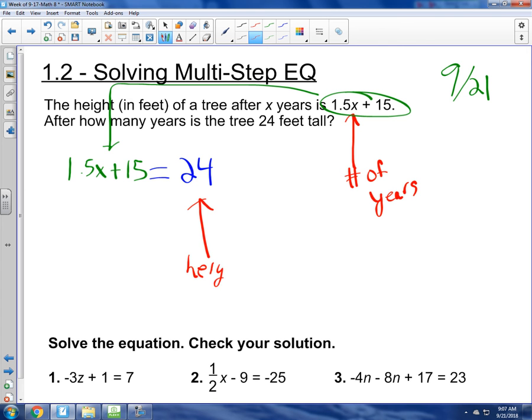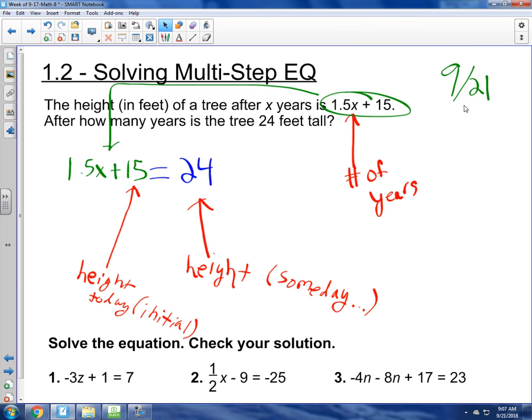Okay, so I'll just call it the height, the height, and I'm going to call that someday. I don't know when, but that's the height someday. What do you think that this represents, the 15? The initial height? We like to call it initial height, especially in physics class. And what do you think this 1.5x represents? Yes, I want to use the word, the rate at which the tree is growing. That's the rate of the tree's growth.